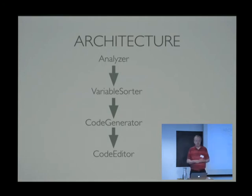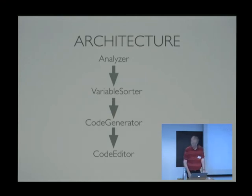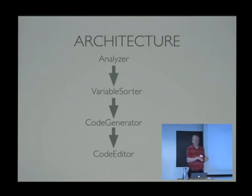Here's the architecture of what I've done. First I analyze the variables - which variables exist in the part of the code that you want to extract, which exist before and after, and which need to be passed into and out of the new method. Then I have something called the variable sorter that finds out what you need to do with the different variables, the code generator that generates the new code, and the code editor that inserts the new code in the correct places.